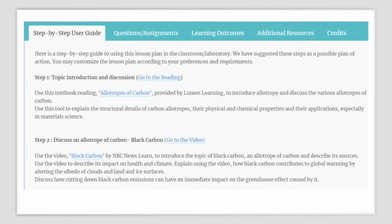Here is a step-by-step guide towards the use of this lesson plan in your classroom or laboratory. We have suggested these steps as a possible plan of action and as a teacher of EVS, you may customize this lesson plan according to your preferences and requirements. First, introduce the topic using a reading titled Allotropes of Carbon, which is provided by Lumen Learning, to introduce to your students what is allotropy and discuss the various allotropes of carbon. You can use this reading to explain the structural details of carbon allotropes, their physical and chemical properties, and applications especially in material sciences.